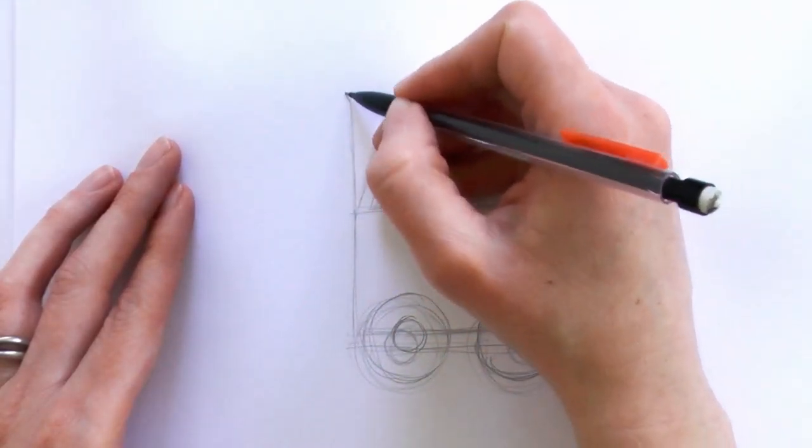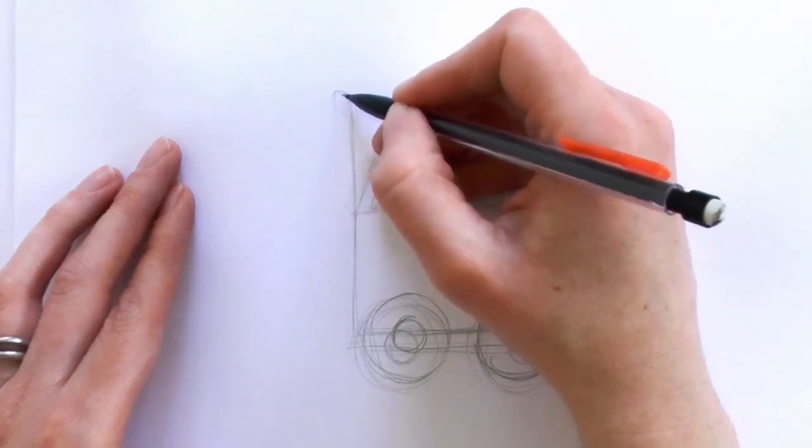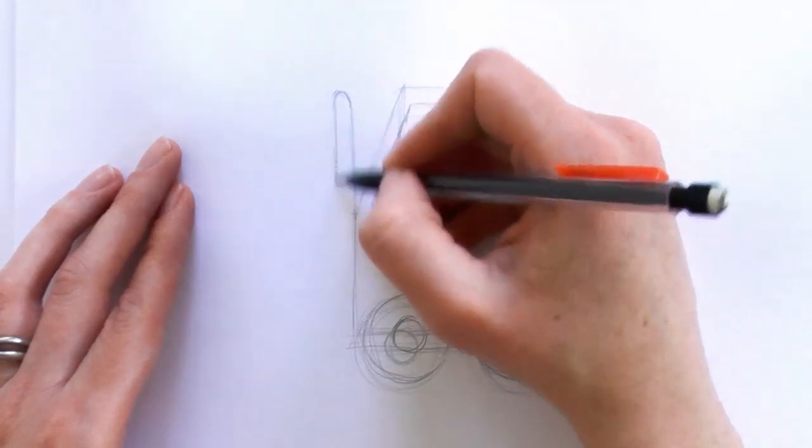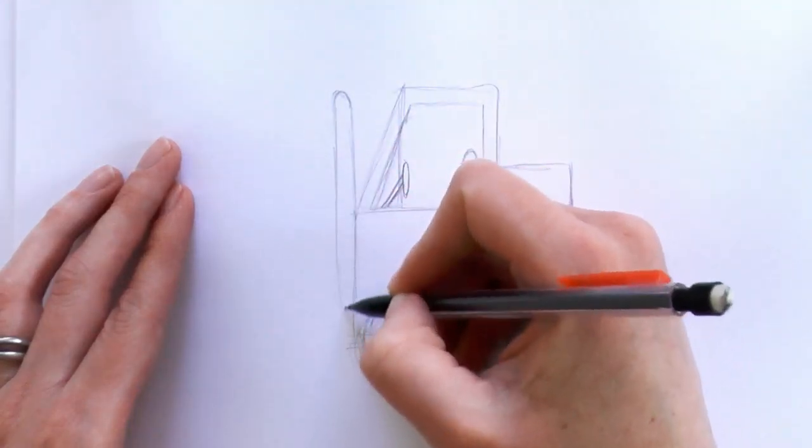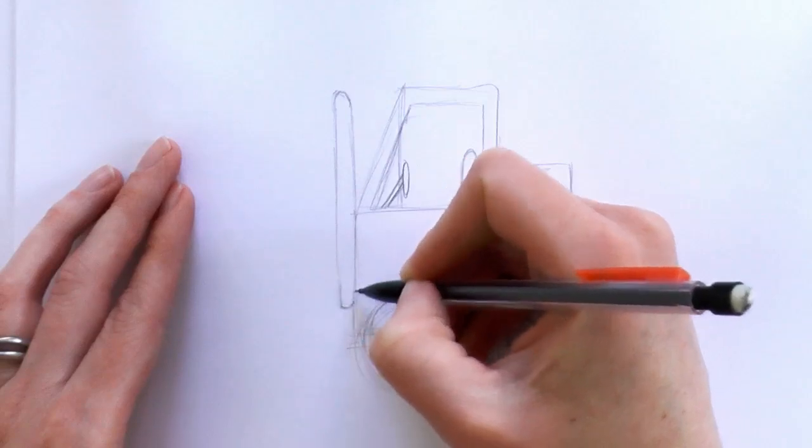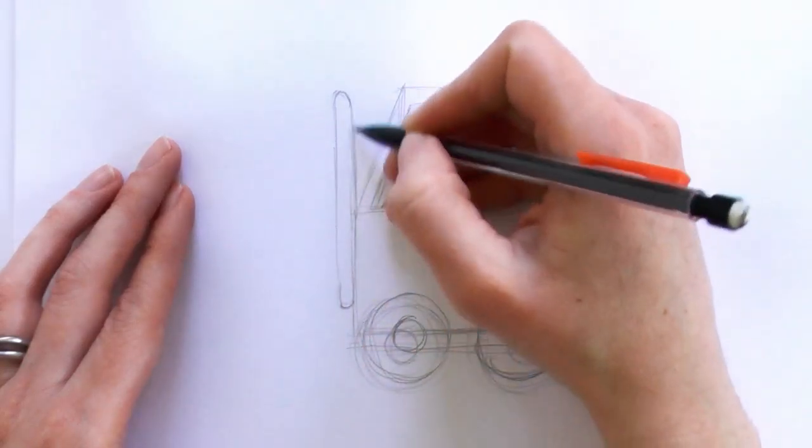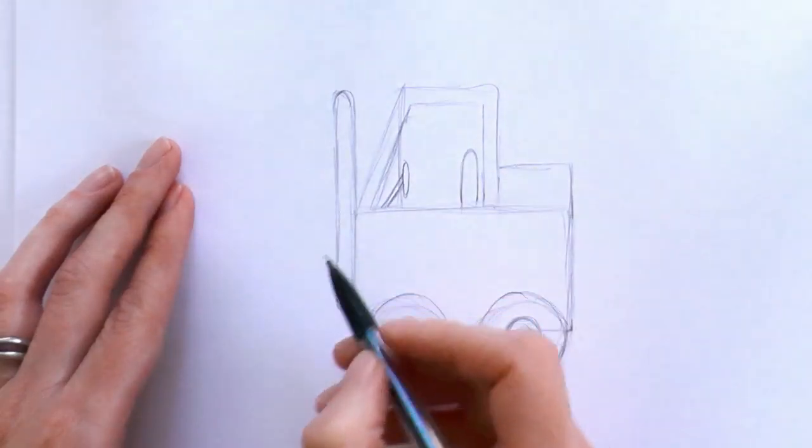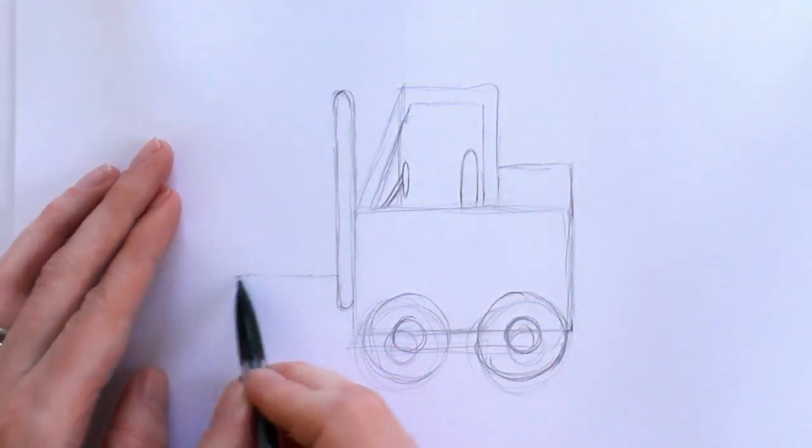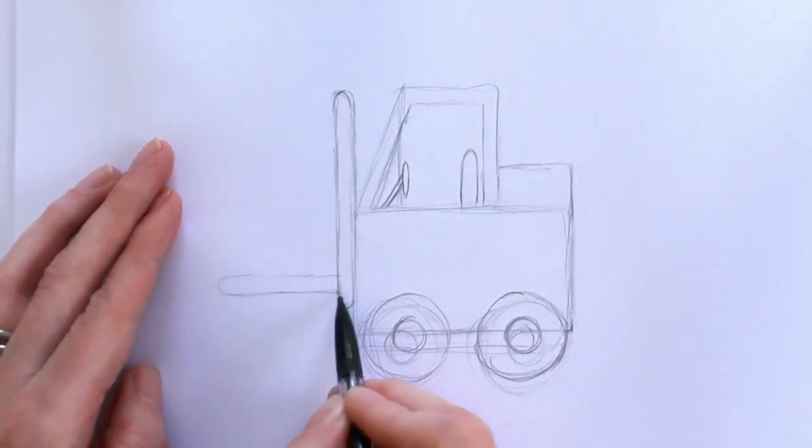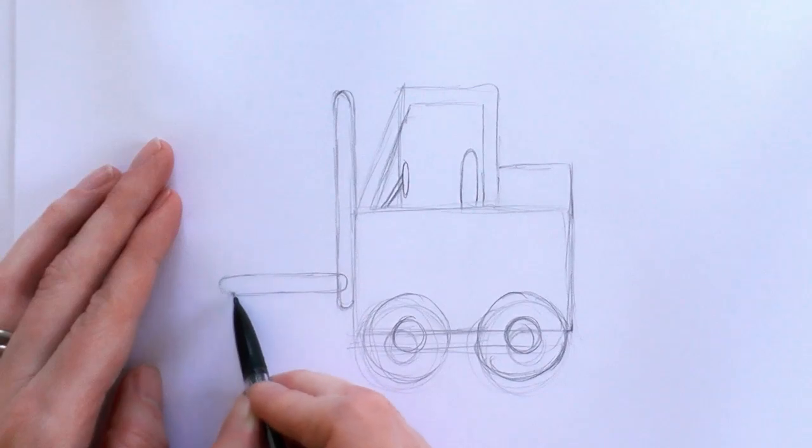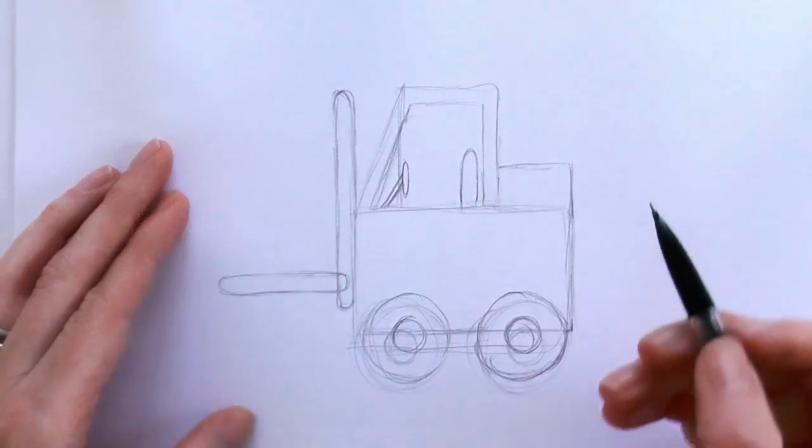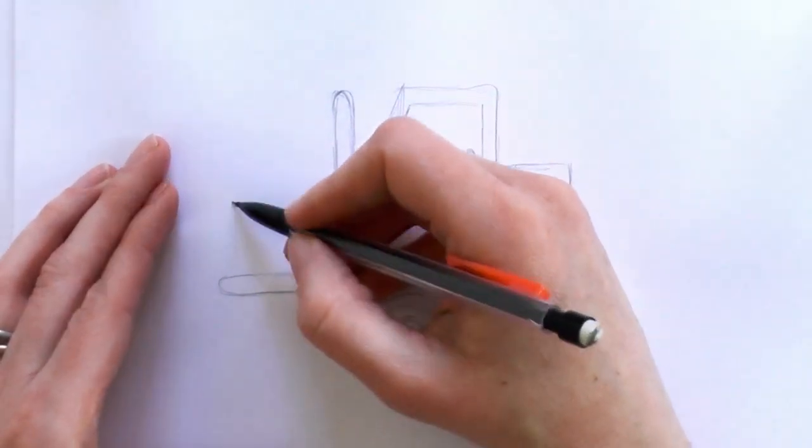So first up then, then we draw kind of like a rounded rectangle, like that, and then another one up the side. And then a square.